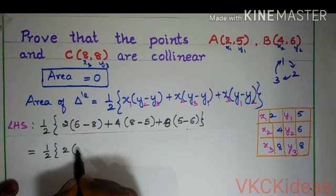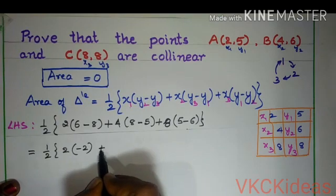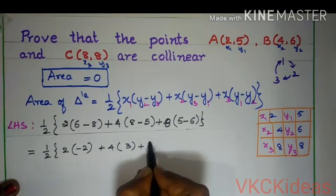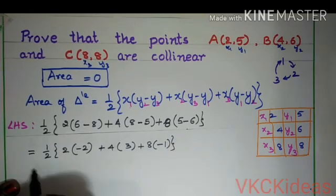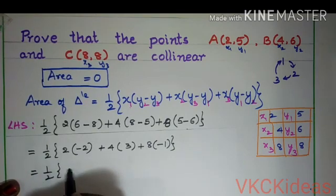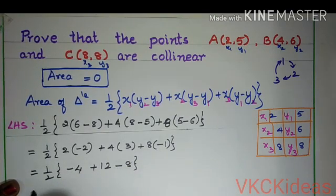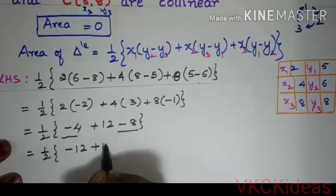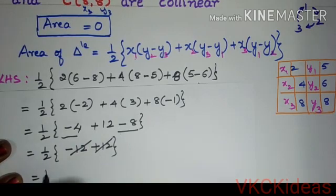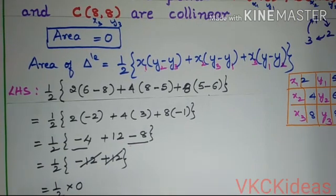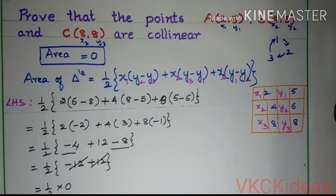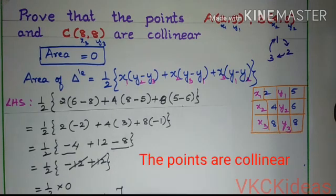Half into 2(6 − 8) plus 4(8 − 5) plus 8(5 − 6). That gives half into 2(−2) plus 4(3) plus 8(−1), which is half into −4 plus 12 minus 8. The −4 and −8 together give −12, and plus 12 cancels it, giving 0. Since LHS equals RHS, the area of triangle is 0, and therefore the points are collinear.